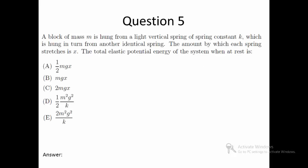Question 5. A block of mass m is hung from a light vertical spring of spring constant k, which is hung in turn from another identical spring. The amount by which each spring stretches is x. The total elastic potential energy of the system when at rest is which of the following.